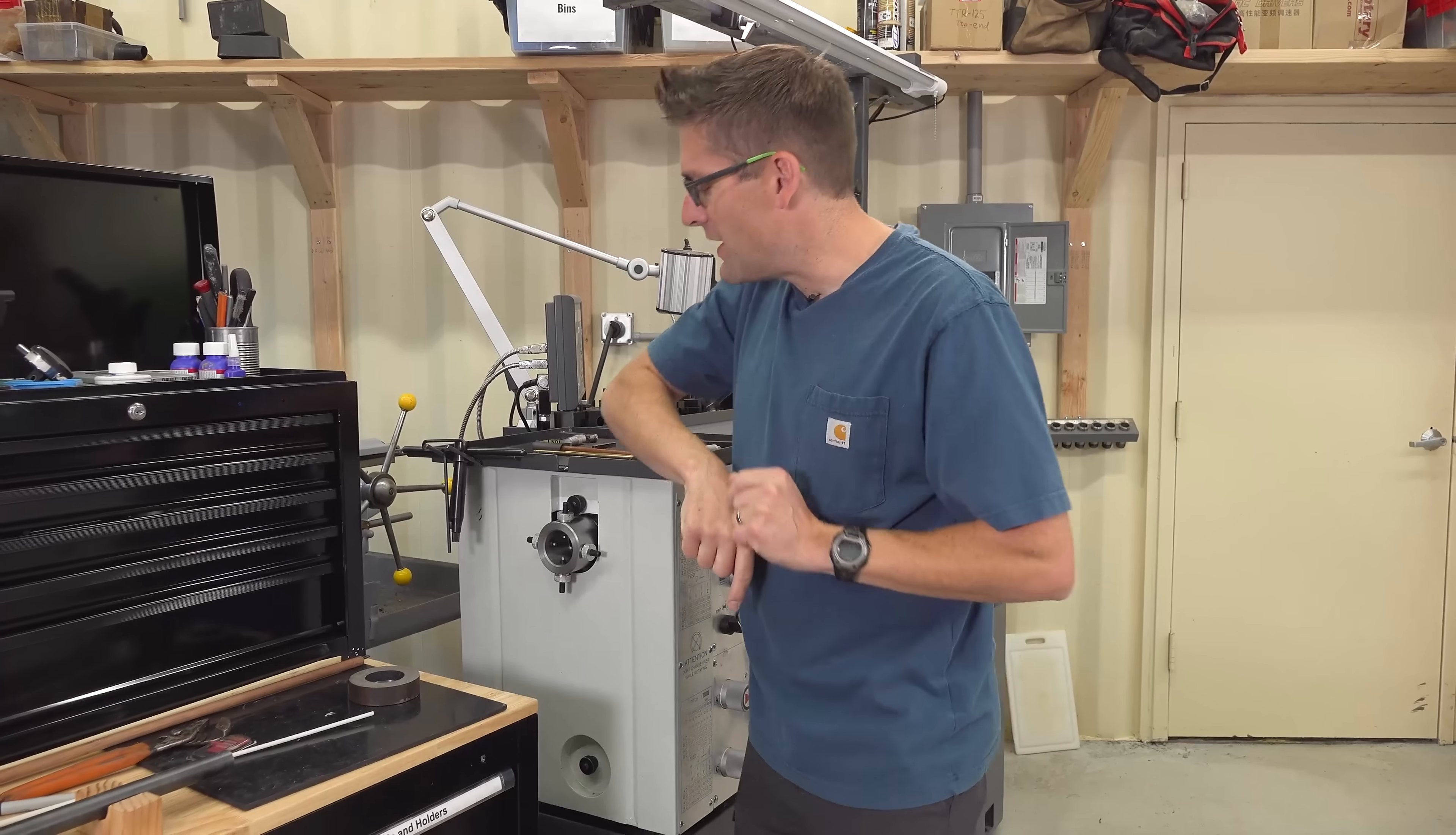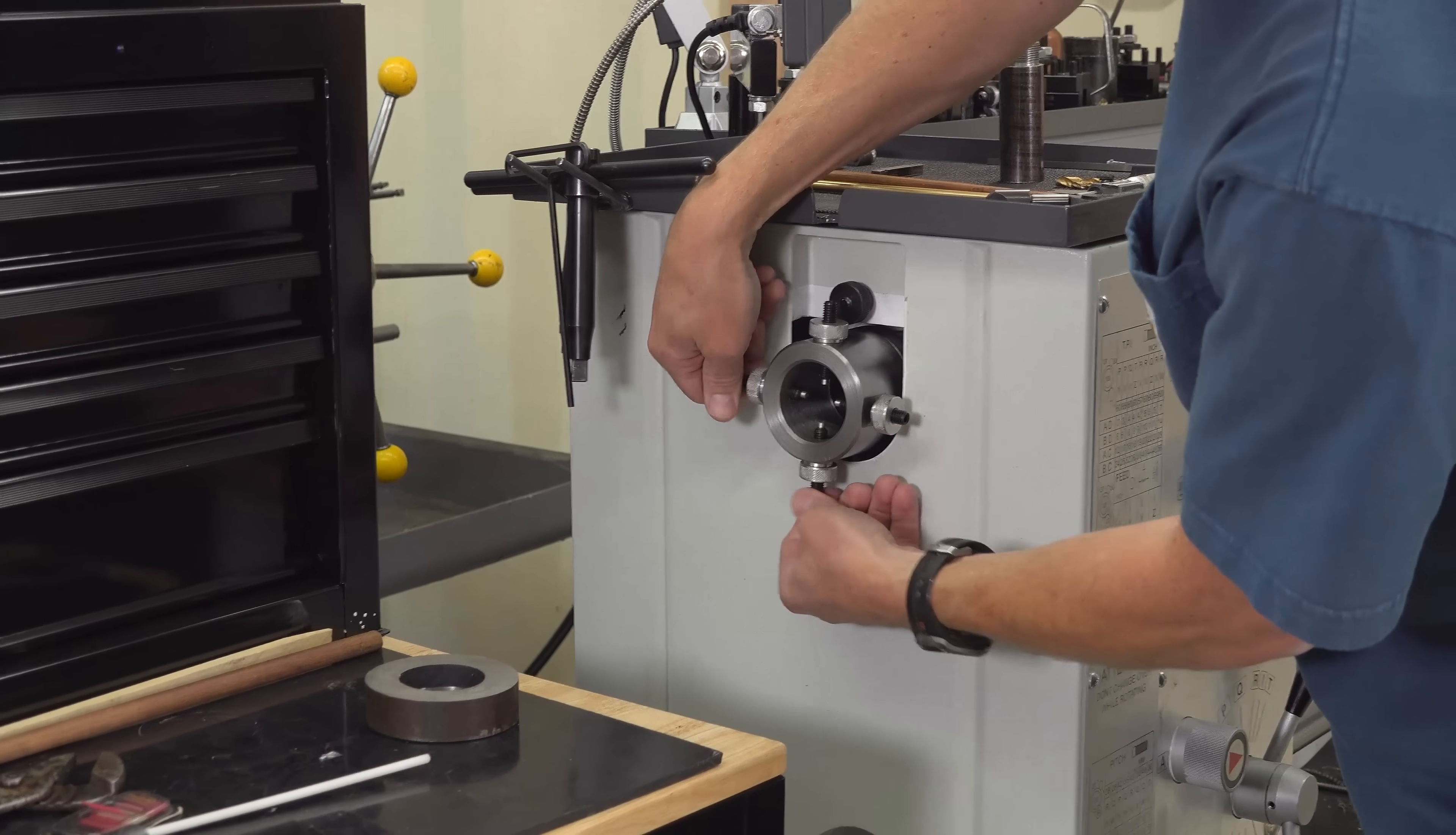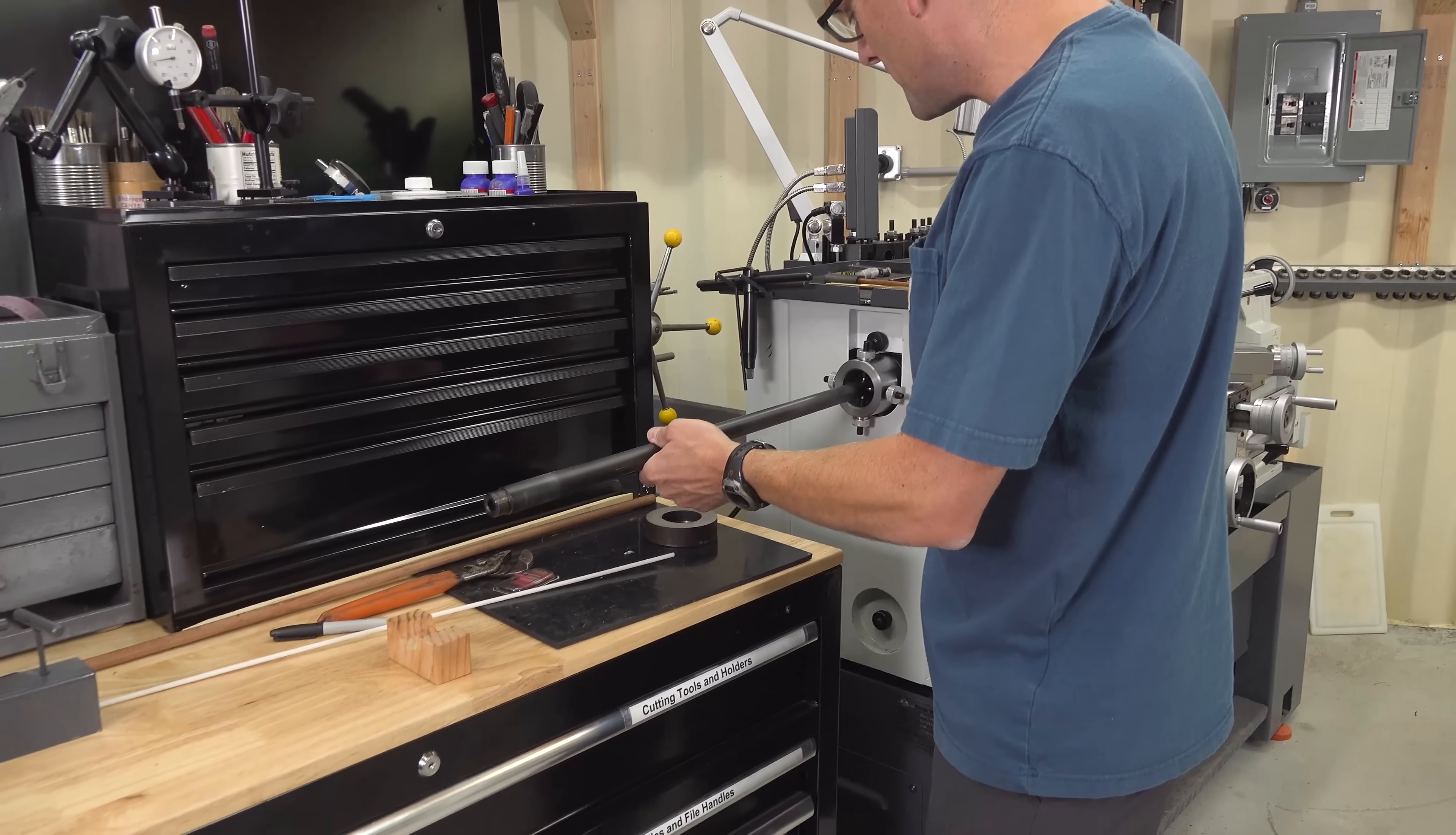So let me go through the basic features of this spider. Basically it sits outboard of the left end of the spindle. It's got thumb screws and you can back these thumb screws out and then turn in the screws to whatever positioning they're needed to support the outboard end of a long slender object.